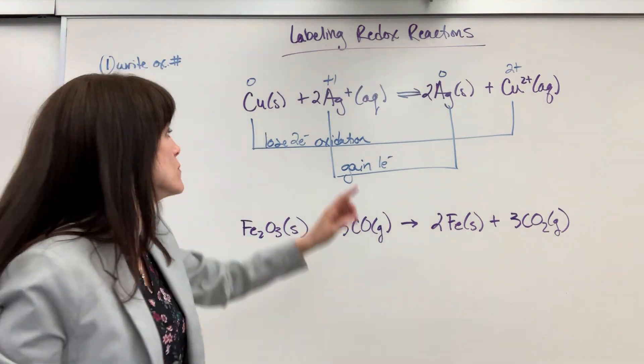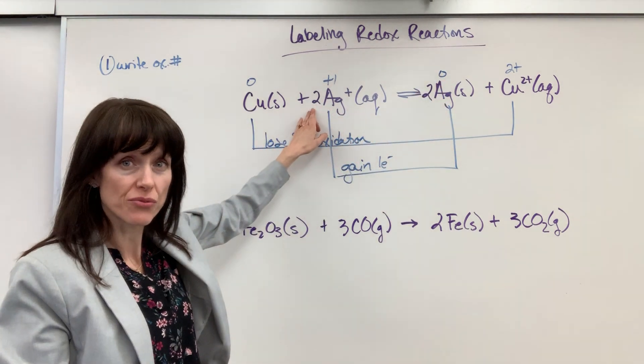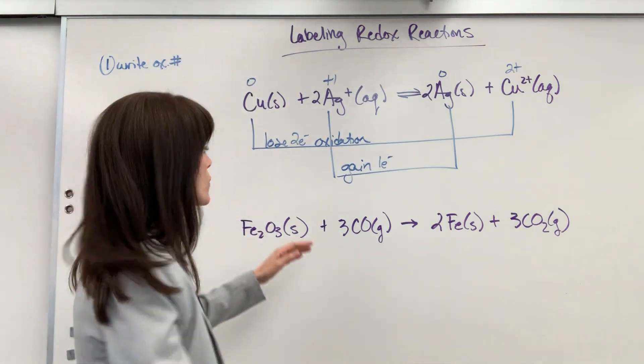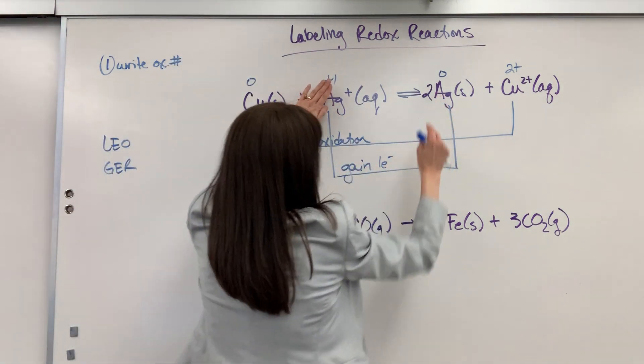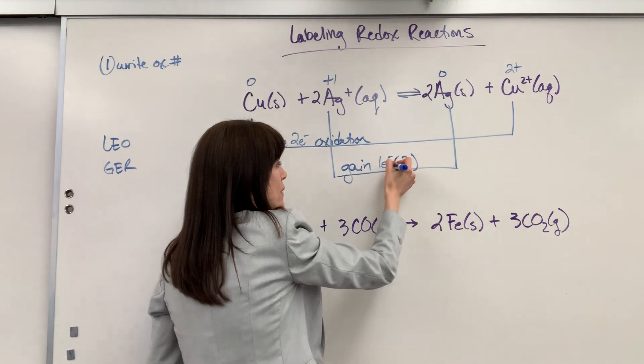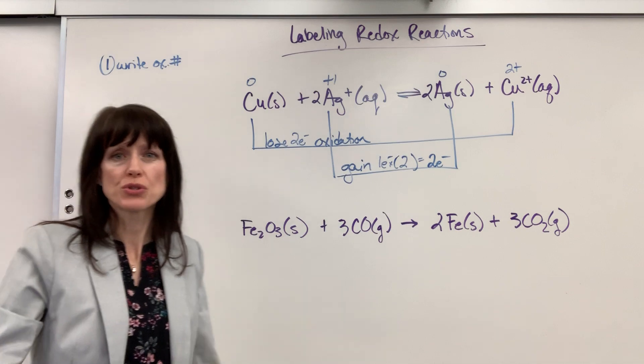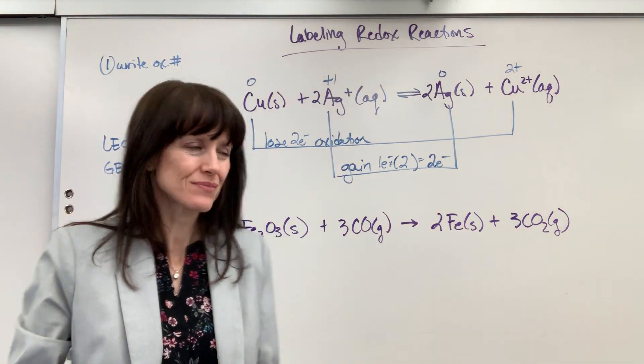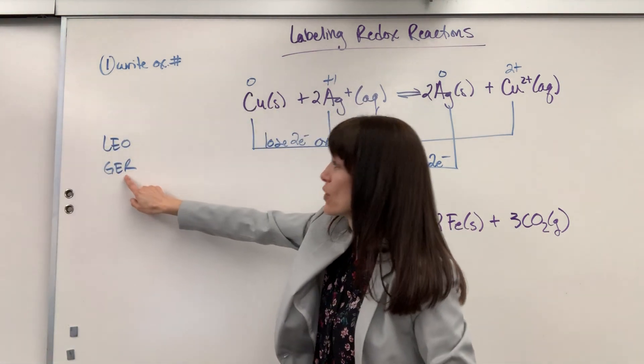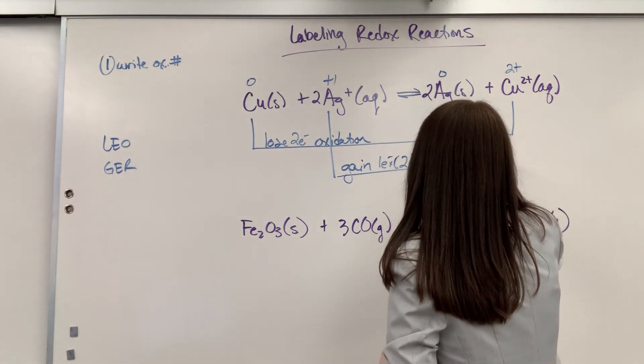Now notice that I wrote one. I'm looking just at the oxidation numbers. But this has a coefficient in front of it. I don't have one silver, I actually have two. So what I've written here is that one silver is going to gain one electron. But if I've got two silver atoms, I'm going to multiply that by two. Total, we are going to gain two electrons. Two electrons will be gained. Now, what's that called? Gain electrons. Gain. Here we go. Gain electrons. Reduction. Reduction. So this is called reduction.